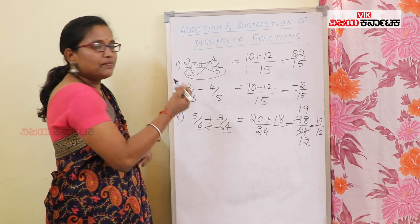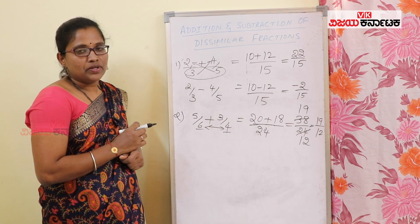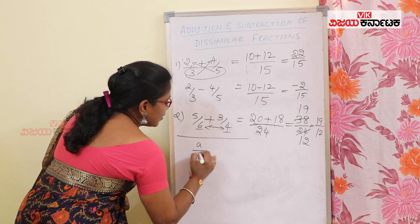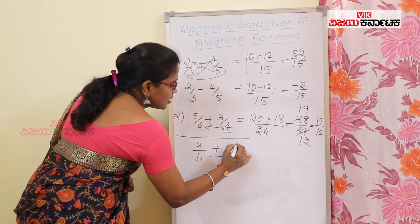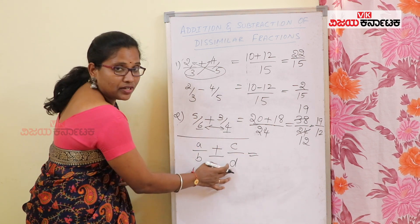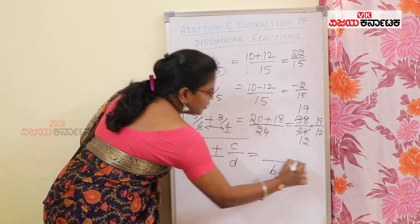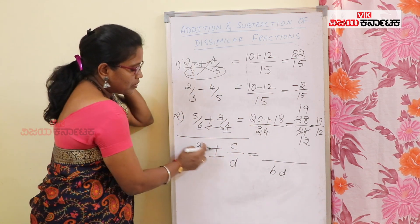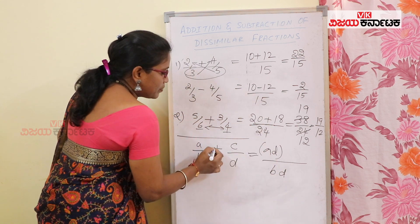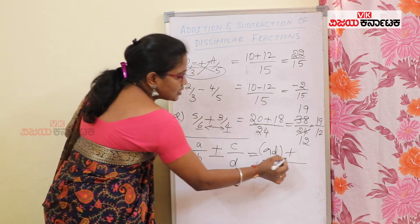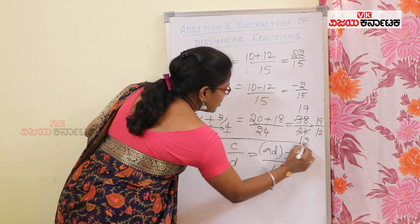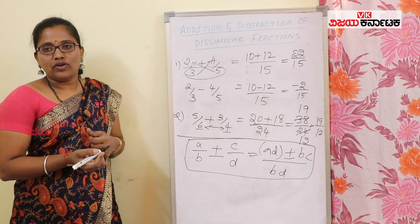The standard way and standard trick: for two fractions a by b plus or minus c by d, multiply the two denominators — that is b into d. Then cross-multiply the numerators: ad plus or minus bc. So the result is (ad ± bc) over (b into d). This is the standard rule we follow for two dissimilar fractions.